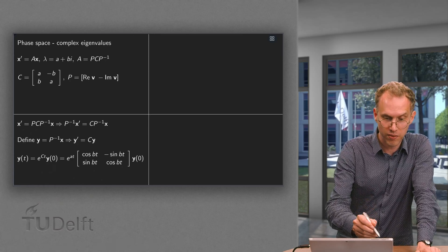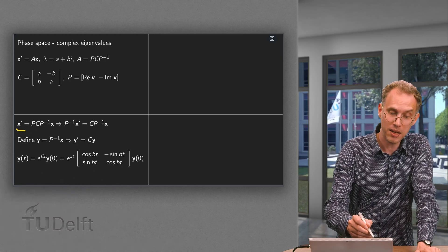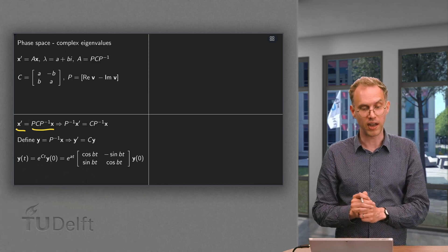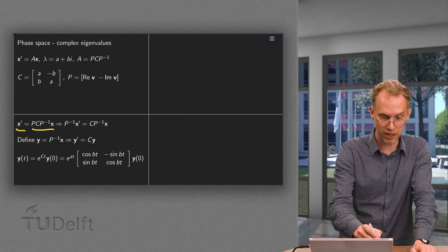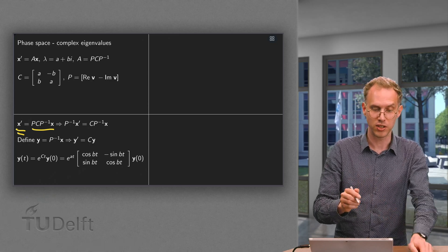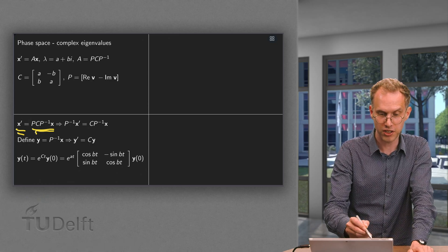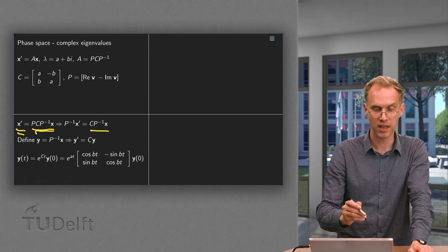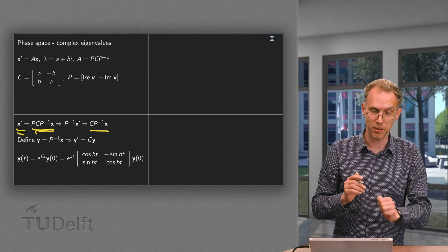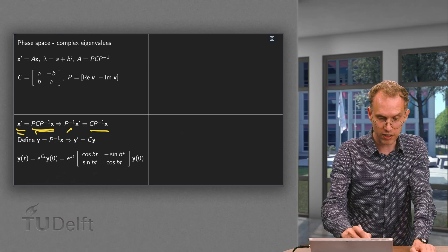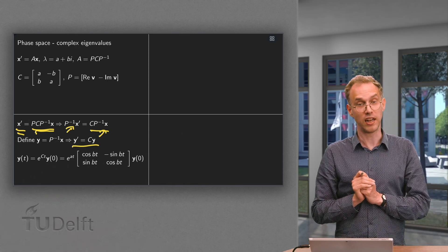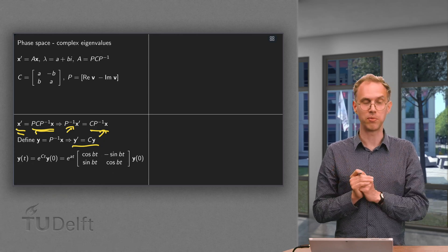We use the familiar trick. We write x prime equals a, but a equals p c p inverse times x. Then we multiply left with p inverse, so we get p inverse times x prime equals p inverse times p is identity. So what is left on the right is c times p inverse times x. Then as usual we define y equals p inverse times x. So then here we get y prime and here we get c times y. So our new problem is then y prime equals c times y.